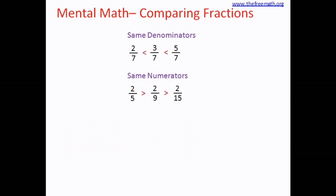But sometimes it is easier to make the numerators the same. Consider this example: 1 over 3 and 4 over 13. One way is to calculate the LCM of 3 and 13, but in this case the easier way is to make the numerators the same — that means make both numerators 4, so the fractions become 4 over 12 and 4 over 13. I multiplied the numerator and denominator of the first fraction by 4. Since the numerators are the same, I know 4 over 12 is bigger than 4 over 13, which means 1 over 3 is bigger than 4 over 13.